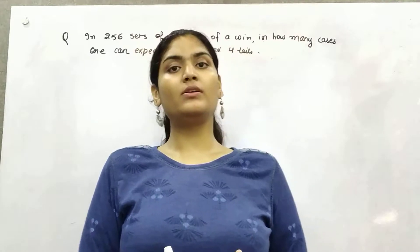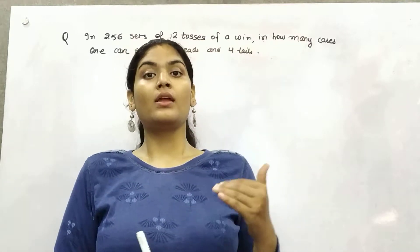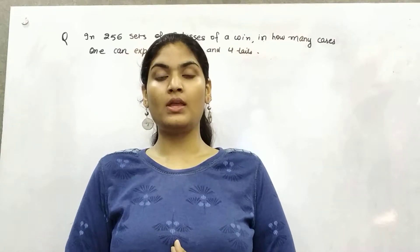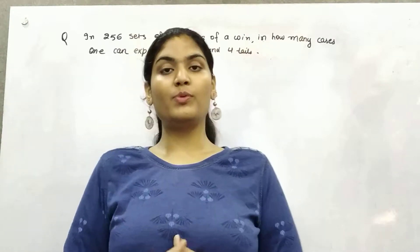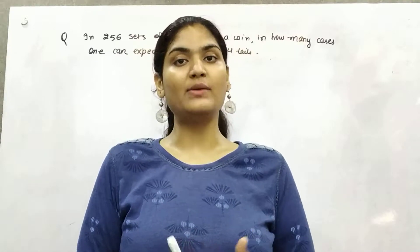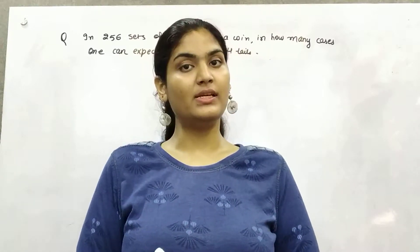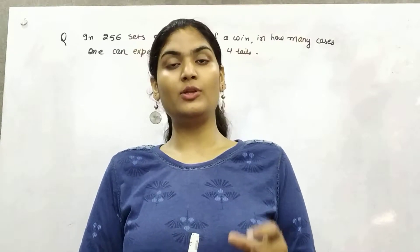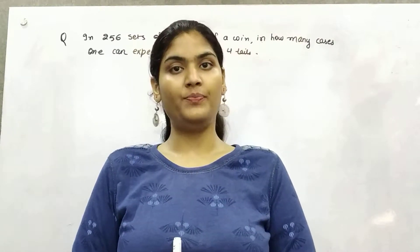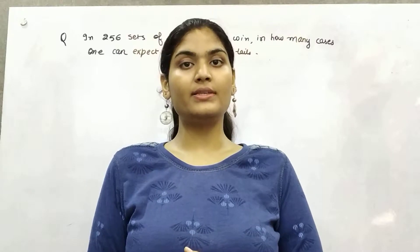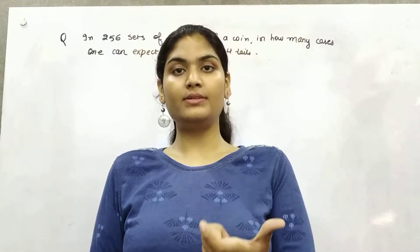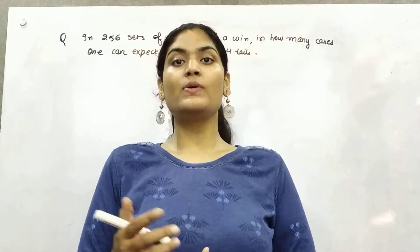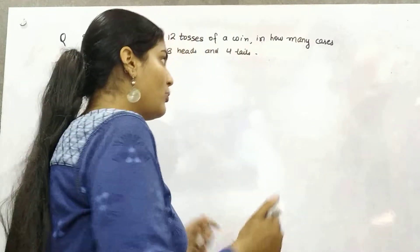So today what we are going to discuss is how we can relate binomial distribution with probability. Binomial distribution of probability is that how many times a particular event is repeating. And let's say you want to find out the probability of getting a head. Then getting a tail is your failure and getting a head is your success outcome.